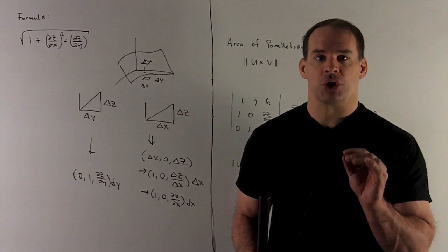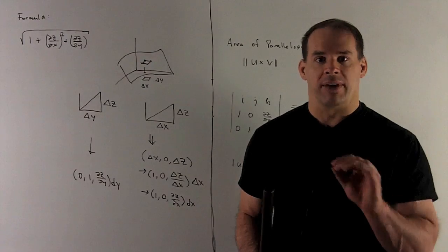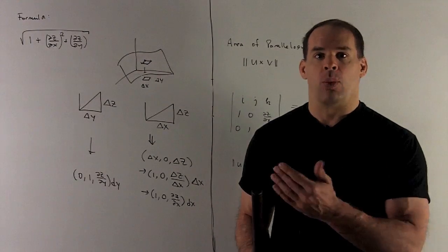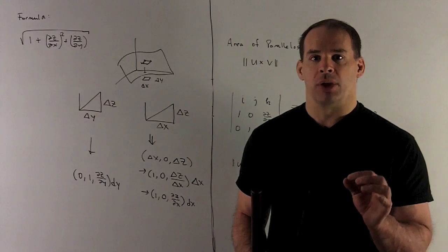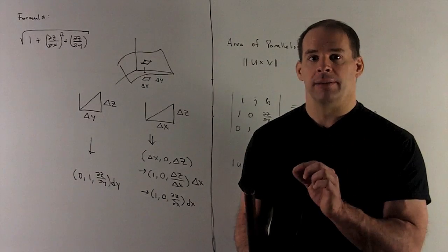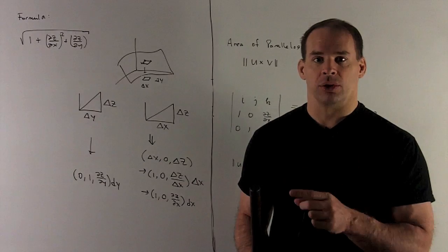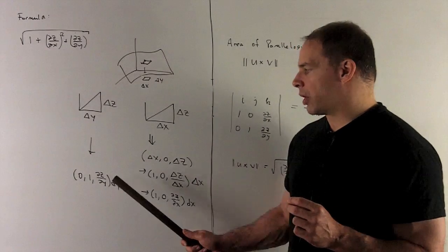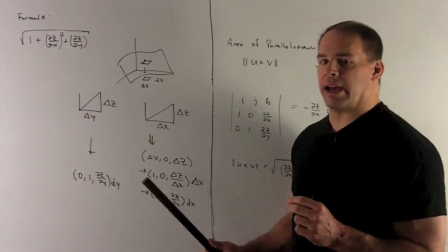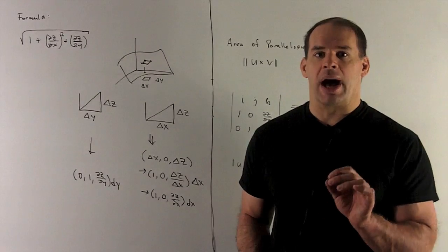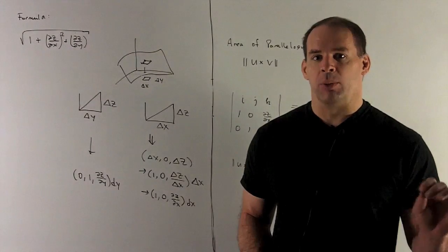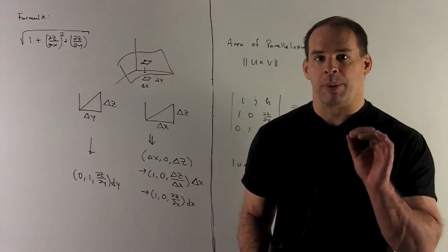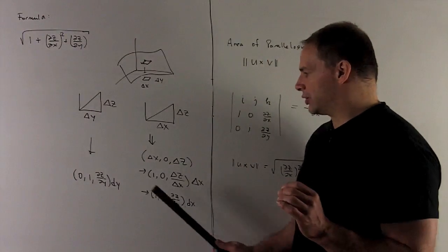Run through the similar trick for the y variable. What comes out of there? Now you'll be in the yz plane. So you'll have 0, delta y, delta z. And then you divide through, take your limit. That gives you the vector 0, 1, partial z partial y, and then a dy on the outside. We can take the dx and the dy, set them aside. That's going to be what you would integrate over. We're more interested in getting the area of the parallelogram that goes with these two vectors here.